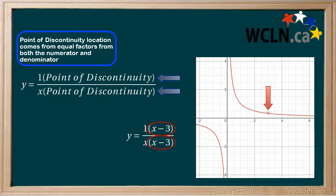An important point to know is that when you have the same factor in the numerator and denominator, it always represents a point of discontinuity and never an x-intercept and a vertical asymptote.